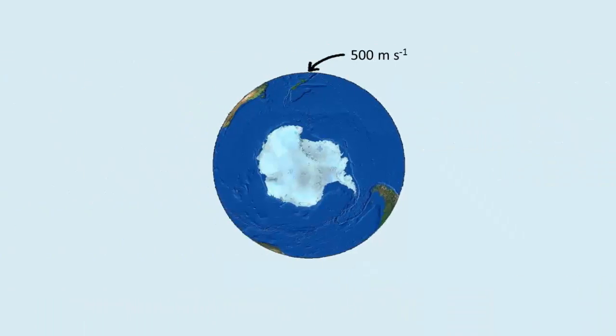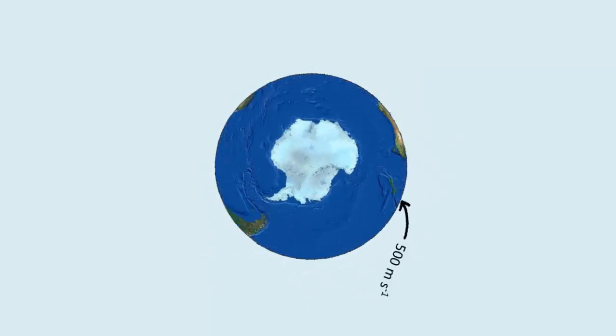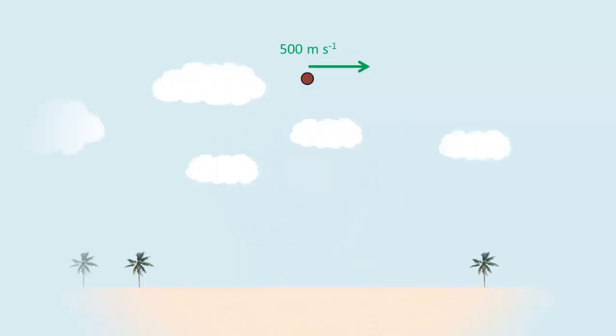If you are on the equator, things that appear stationary are actually moving at about 500 meters per second. So dropping a stone on the equator is equivalent to projecting it sideways at 500 meters per second.